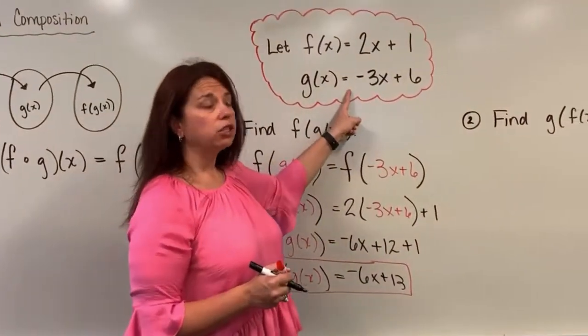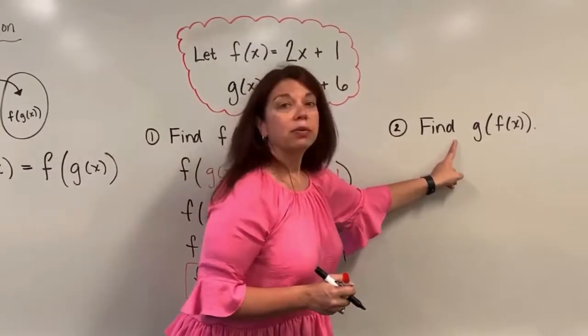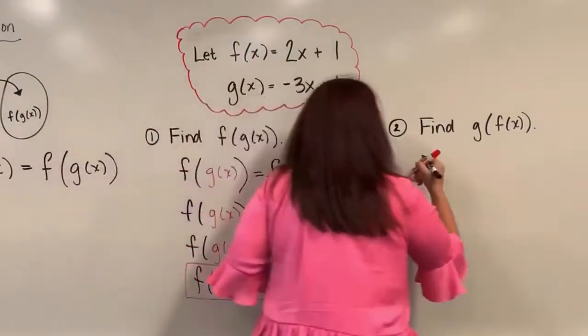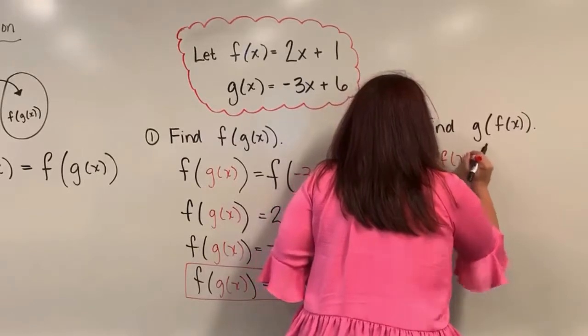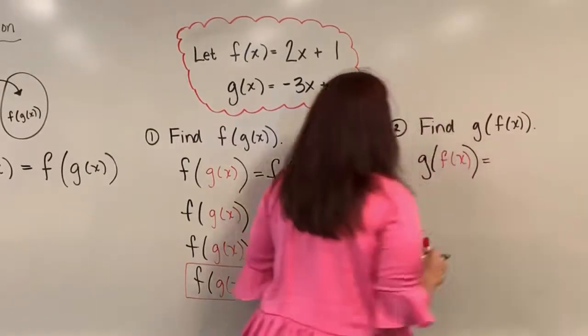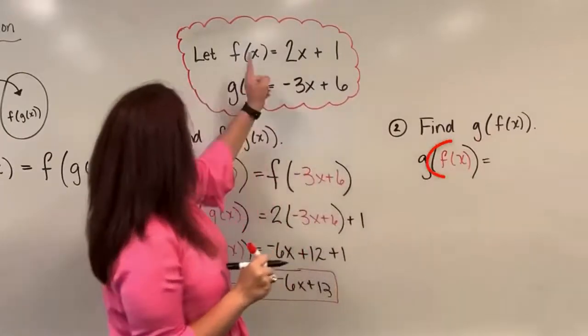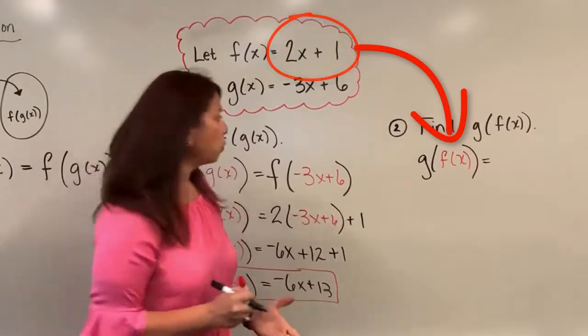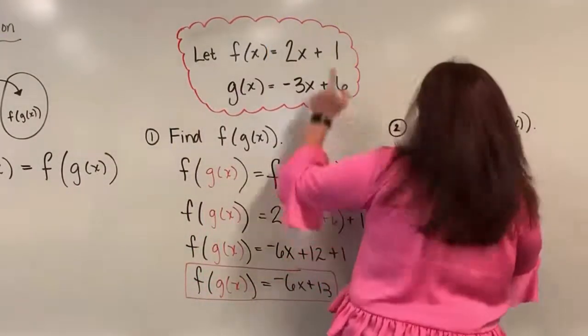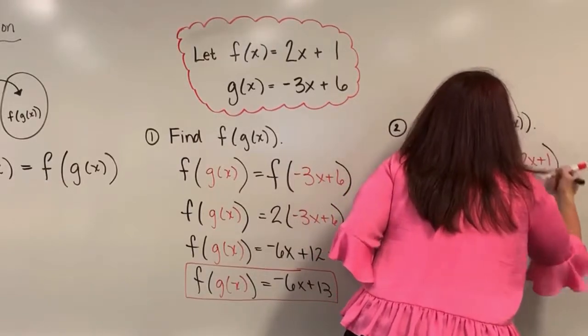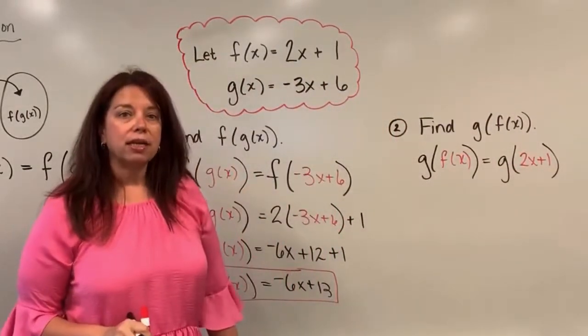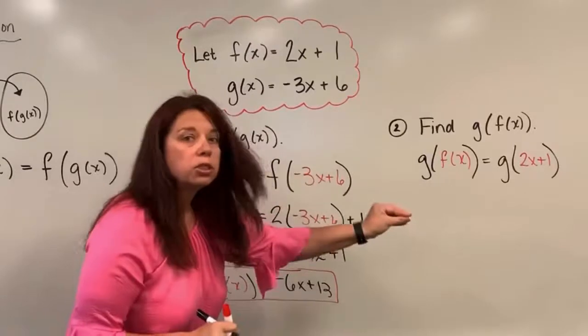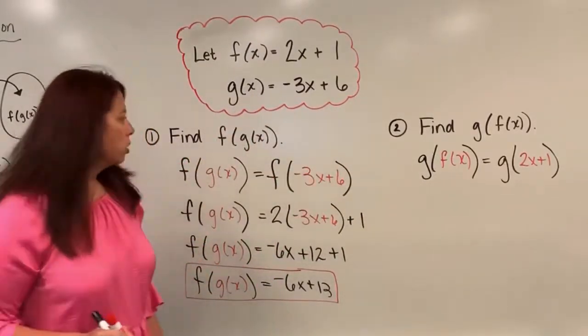Same two functions, f of x and g of x. I want to now find the reverse order, g of f of x. So here we go. I have my notation, g of f of x is equal to, I know that f of x is defined to be this function 2x plus 1. So I'm going to replace f of x with that 2x plus 1. So I now have g of 2x plus 1.